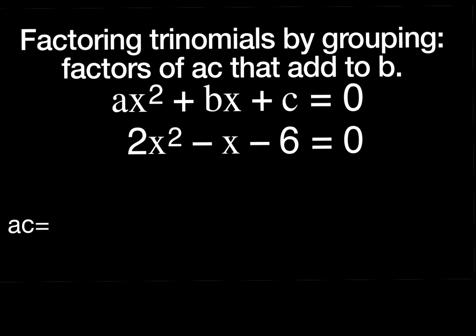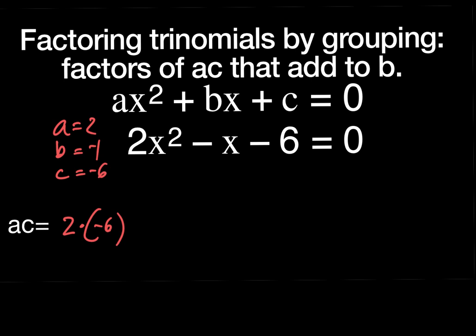What we did in the past: we looked at a trinomial and asked what two numbers multiply to the last term and add to the middle one. It's going to be a little different now that the leading coefficient is two. The ones we've done until now usually had a leading coefficient of one — just x squared. So now my a is two, my b is negative one, and my c is negative six.